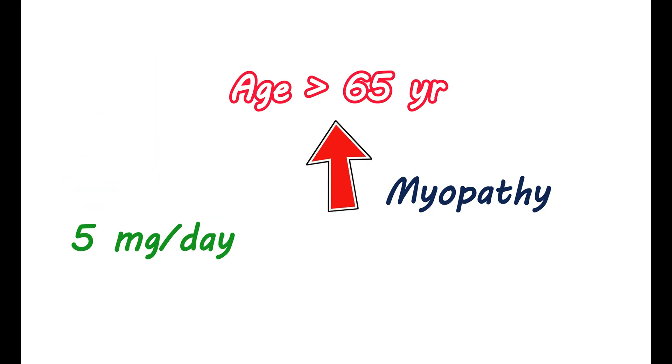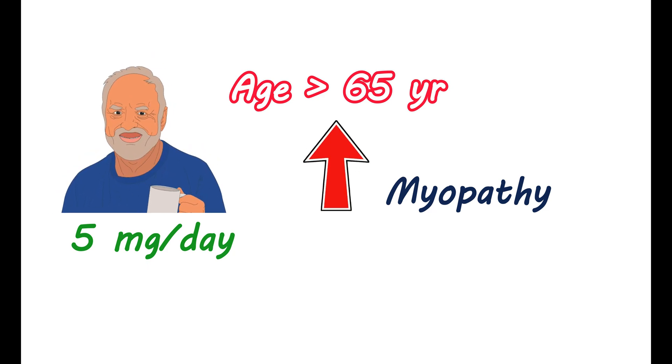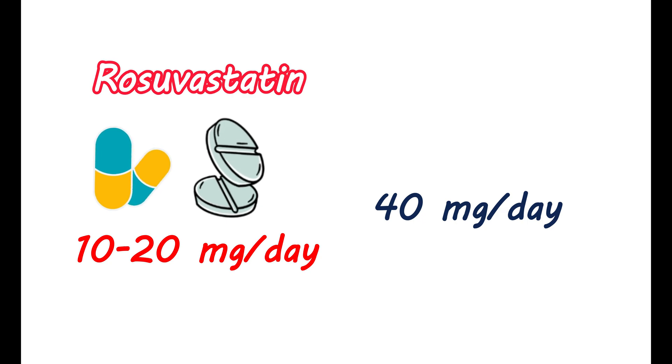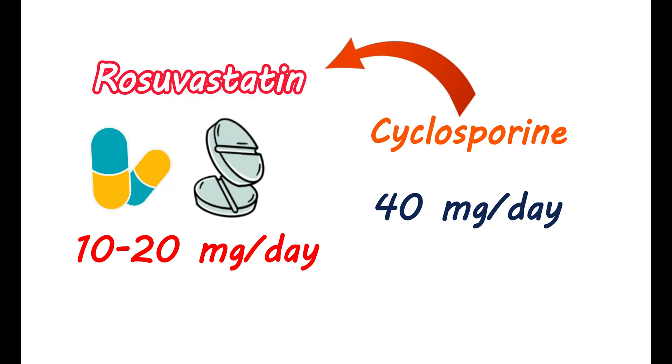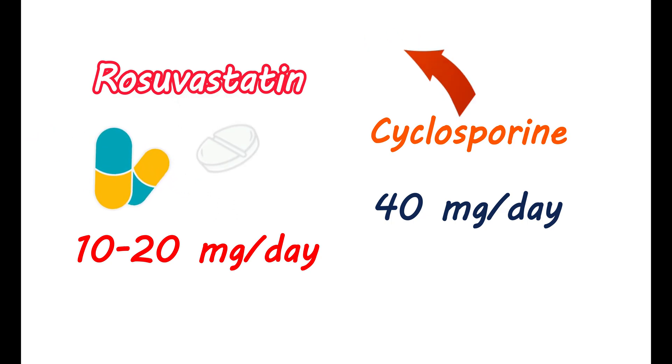Rosuvastatin is metabolized to some extent in the liver. If you have severe hepatic impairment, this medication should be avoided. It is available as a tablet from 5 mg to 40 mg, and also as a capsule under the brand name Ezetrol Sprinkle. For treating elevated cholesterol levels, it can be used along with diet control, started at 10–20 mg per day based on risk factors. The maximum dose should not exceed 40 mg per day. Lipid levels should be monitored after 2–4 weeks and the dose adjusted accordingly. When co-administered with cyclosporin, rosuvastatin should not exceed 5 mg per day.